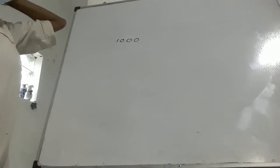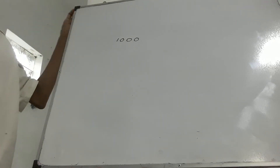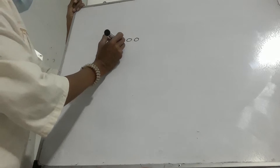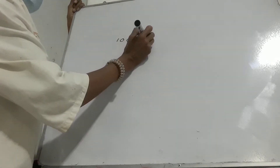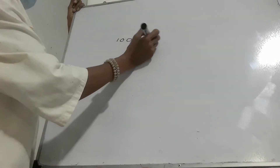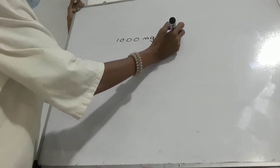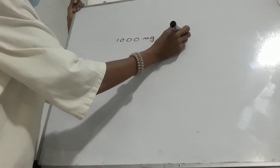Express the mass given in milligrams in terms of grams. 1,000 milligrams is equal to 1 gram.